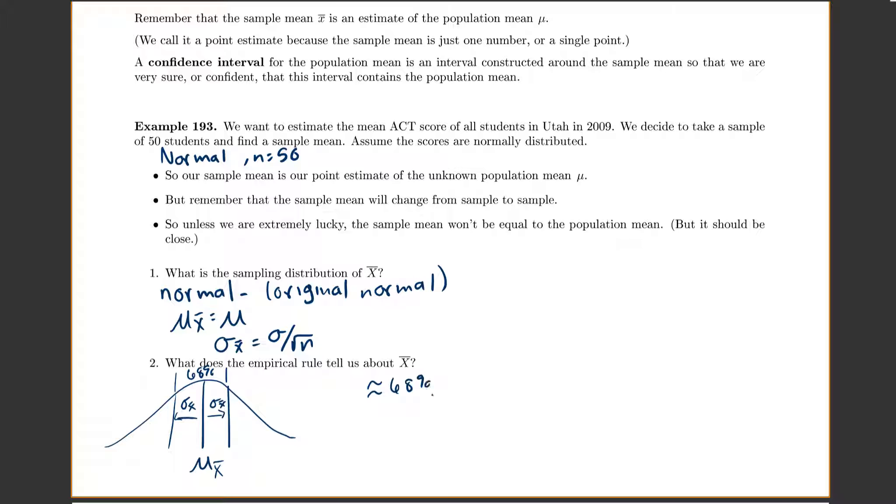So about 68% of all possible values of x-bar are between the center of mu of x-bar plus or minus the standard deviation of x-bar. And then we said if you go out two standard deviations, you'll be even closer. So if you go out two standard deviations, you'll be at 95%. And about 99.7% are going to be between your mean plus or minus three standard deviations.